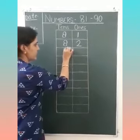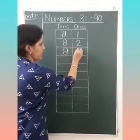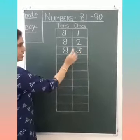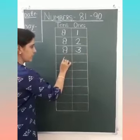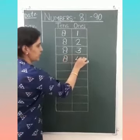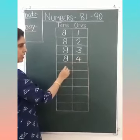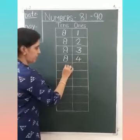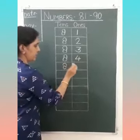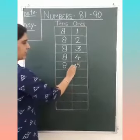Next is 83. At the 10s place: 8. At the 1s place: 3. Next number is 84. At the 10s place: 8. At the 1s place: 4. 84. Next number is 85. At the 10s place: 8. At the 1s place: 5. 85.